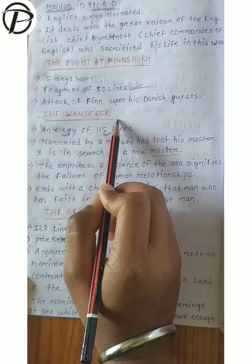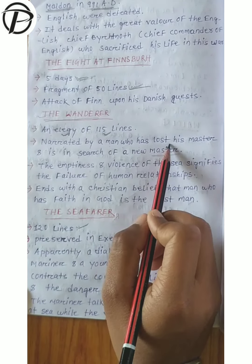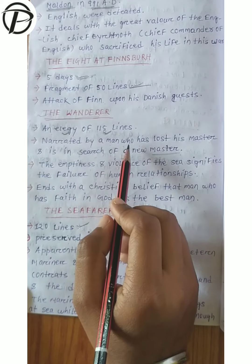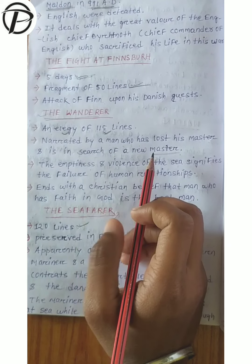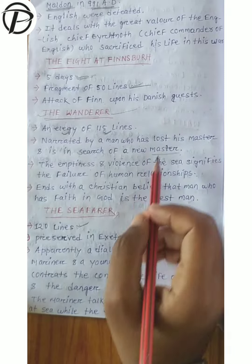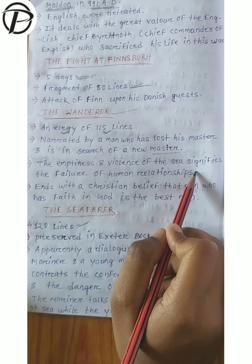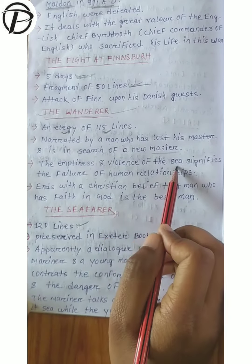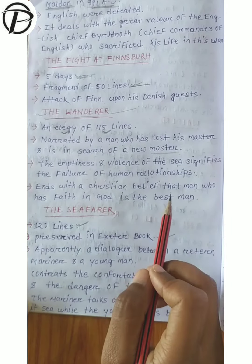Then the important work is The Wanderer, which is an elegy of 115 lines. It was narrated by a man who has lost his master and is in search of a new master - a loyal servant who is wandering, hence the name 'The Wanderer.' The emptiness and violence of the sea signifies the failure of human relationships. As noted about the Anglo-Saxon period, nature was not presented romantically or as soothing but rather as benevolent and furious. It ends with a Christian belief that the man who has faith in God is the best man.